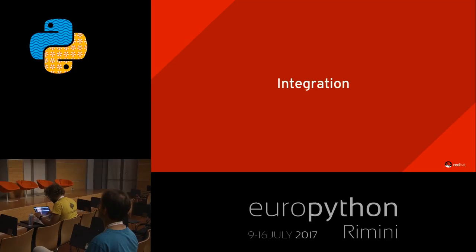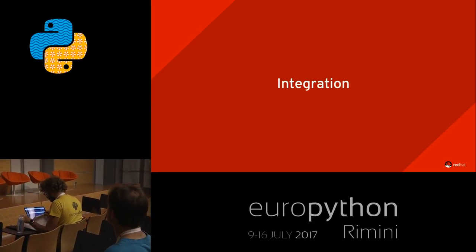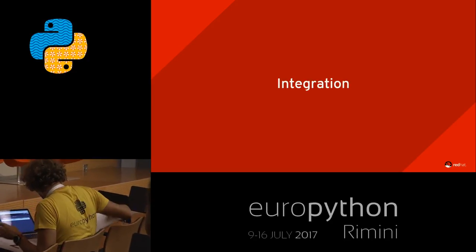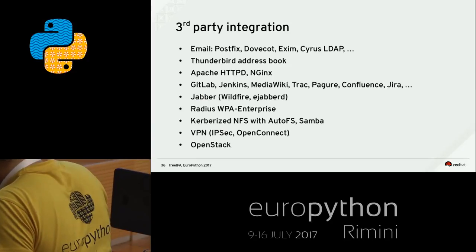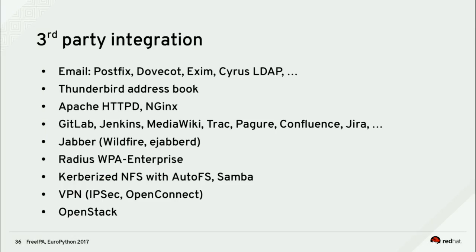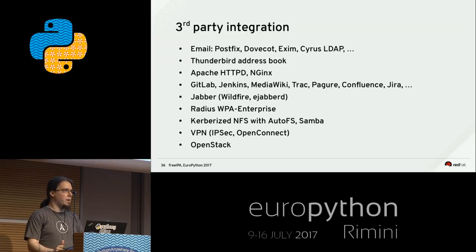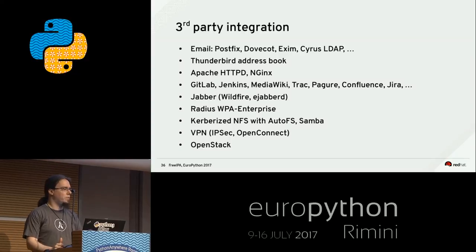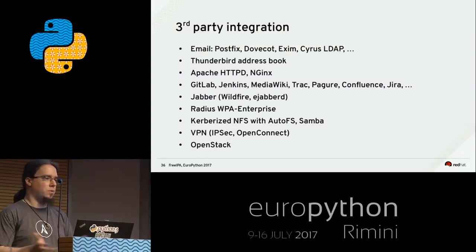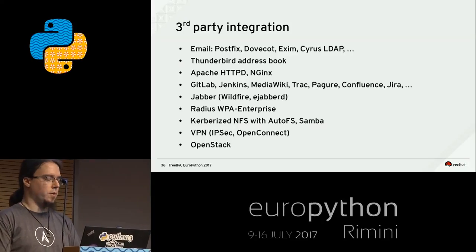You can integrate the whole FreeIPA stack — LDAP, Kerberos, DNS — into many other systems. Examples: store email information in LDAP; use Kerberos for single sign-on; use RADIUS for WPA Enterprise Wi-Fi with roaming users; VPN integration; secure NFS with Kerberos for Kubernetes and OpenShift; OpenStack uses it internally. The integration possibilities are extensive.